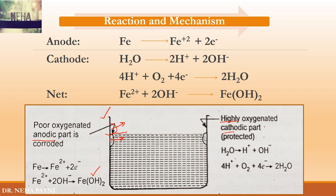One part is anodic — the poor oxygenated part — and the other part is cathodic — the highly oxygenated part. This reaction is quite common to that of wet corrosion, which we have seen in earlier videos. So water line corrosion is basically corrosion which occurs just below the water line, due to the difference in oxygen pattern.